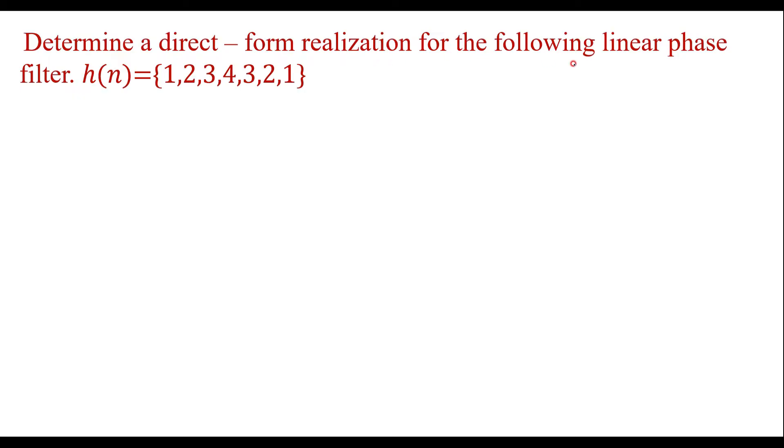Consider one example. Determine a direct form realization for the following linear phase filter: h of n is equal to 1, 2, 3, 4, 3, 2, 1.